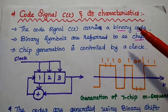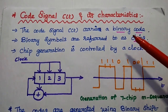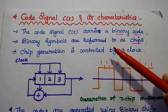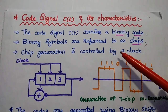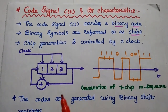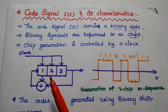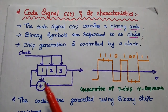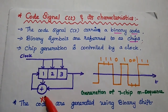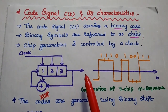Next, we discuss code signal generation and its characteristics. The code signal is a unique binary code waveform for each user. Each binary symbol is represented as a chip, and chip generation is controlled by a clock signal. The codes are generated using binary shift registers — here we consider a three-stage shift register controlled by the clock signal — along with an XOR gate, which is mainly used to produce the unique code waveform for each user.